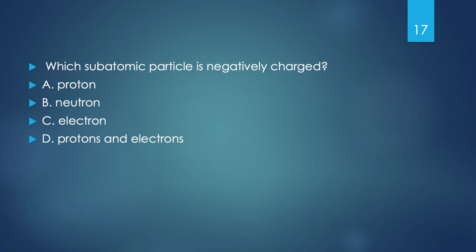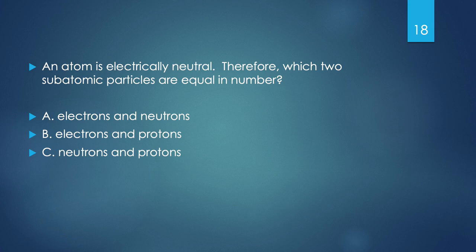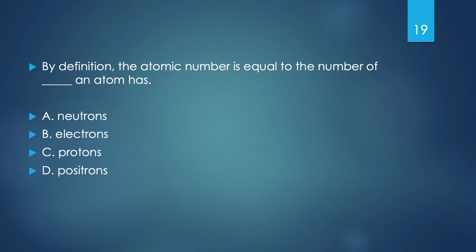Another question: atoms are electrically neutral, so which two subatomic particles must be equal in number? Protons are positive, neutrons are neutral, and electrons are negative. If positive and negative equal out to be neutral, it has to be electrons and protons. One final question: by definition, the atomic number is equal to the number of what? Is it neutrons, electrons, protons, or positrons? The atomic number is the number of protons. We just did all that math calculating atomic mass, so the answer is protons.